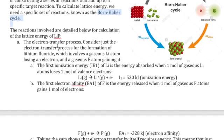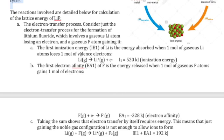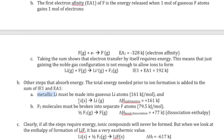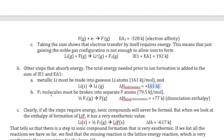Let's work this out with lithium fluoride as an example. Starting with lithium in its naturally occurring solid state: to make separated atoms, we convert it to gas — that's the sublimation enthalpy, an endothermic process of 161 kJ. Fluorine molecules exist as F₂ gas, but we want fluorine atoms, not molecules, so we break that bond apart. The bond dissociation value for fluorine is 77 kJ for that reaction.